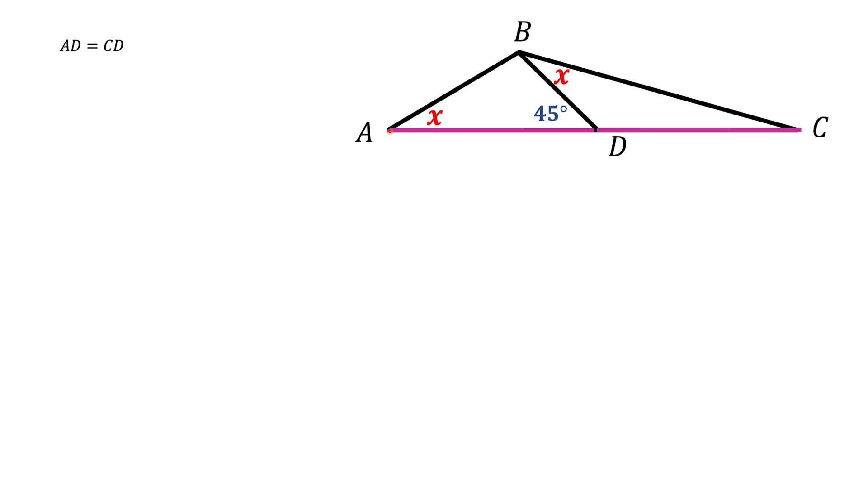Here we have a triangle ABC and we have BD which is side AC bisector. We also know this angle 45 degrees BDA, and we know this angle A and this angle DBC are the same measure, and we are asked to find what this angle is.